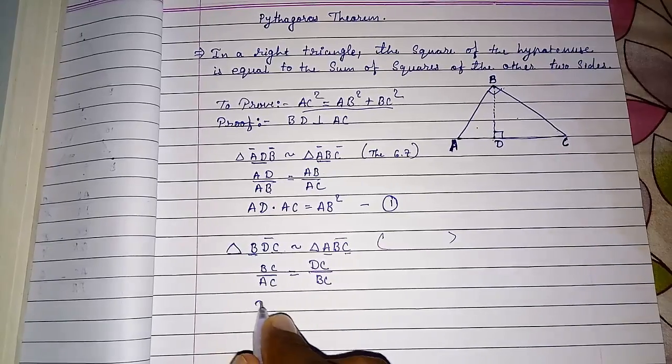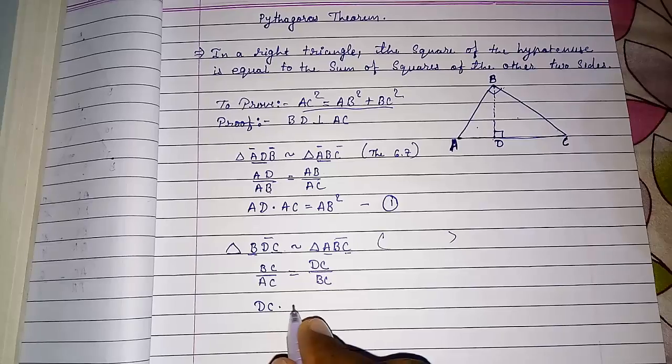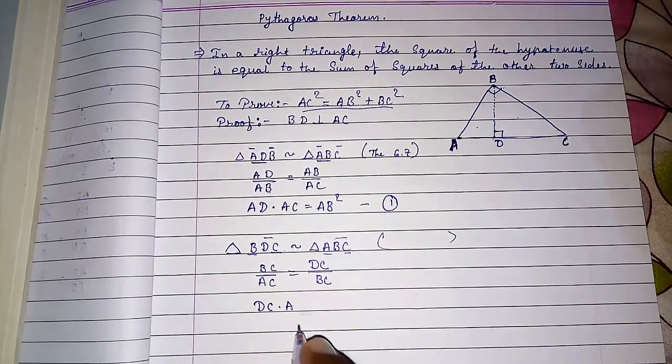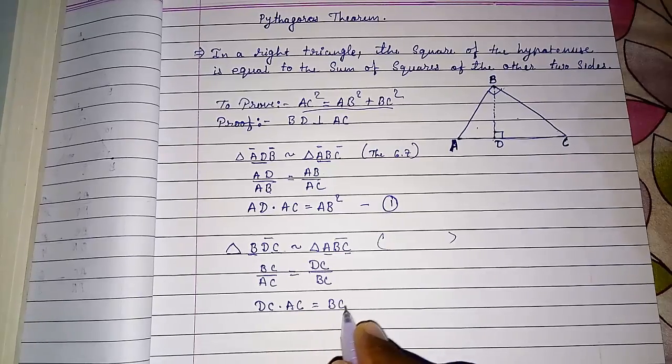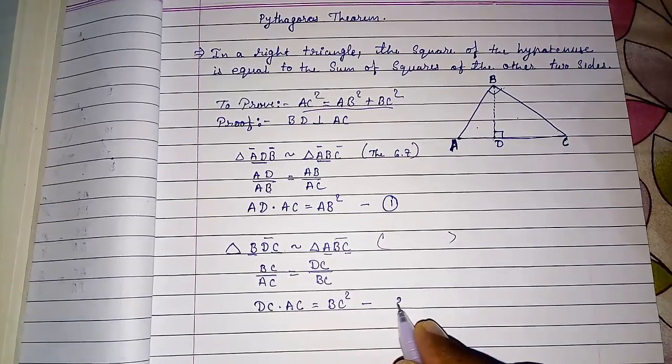Now again I will take this BC here. I am writing here, don't get confused. I am writing first this because I want to use that: DC into AC equals BC square. Result number two.